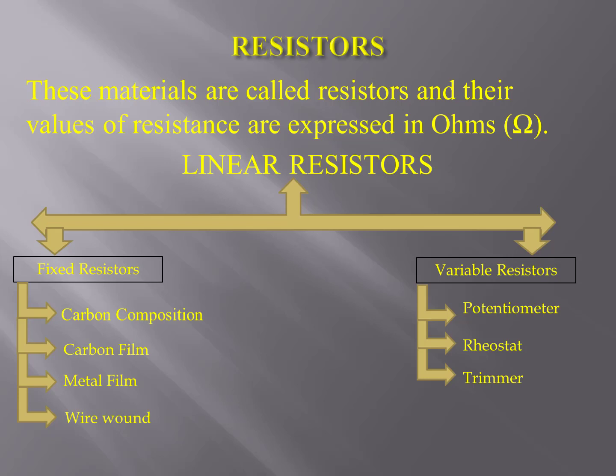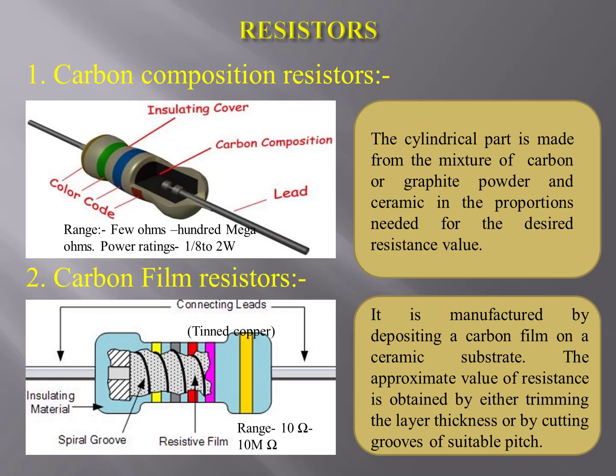Linear resistors are further classified into two categories: fixed resistors and variable resistors. Examples of fixed resistors are carbon composition, carbon film, metal film, and wire wound. Examples of variable resistors are potentiometer, rheostat, and trimmers.